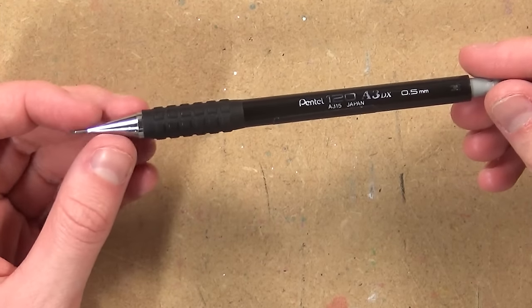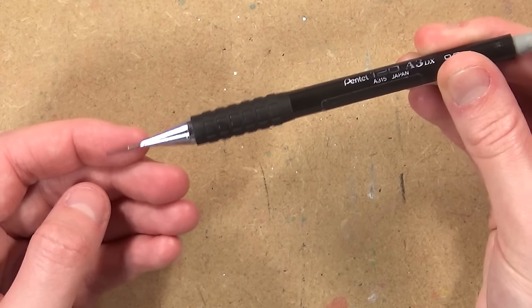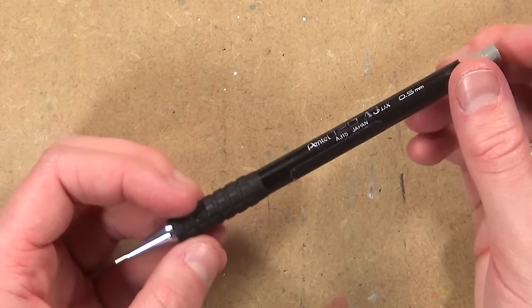To do the initial sketch I like to use a mechanical pencil and I use the Pentown 0.5mm mechanical pencil. What I love about mechanical pencils is that they're a lot more precise and there's a lot less wastage because you don't have to keep sharpening them.